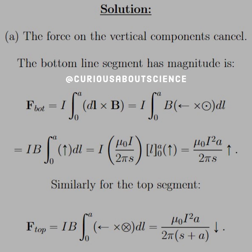Since we have a cross product, we need to take into account the directions, which is why we drew the diagram. We have the magnitude of the magnetic field and the magnitude of the differential line element DL. DL is running from right to left, so that arrow points left, and the magnetic field is pointing out of the page. Left cross out, according to the right-hand rule, leads to a direction of up. The integral over the line segment gives A minus 0, which is A. So force bottom equals mu naught I squared times A over 2 pi S, pointing up.